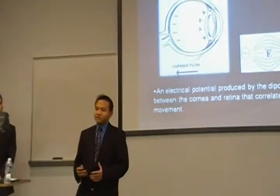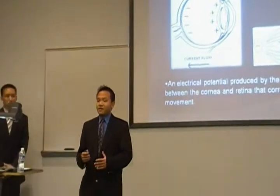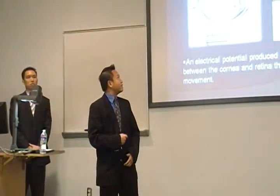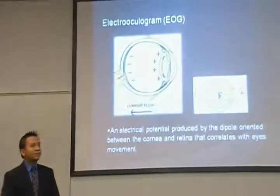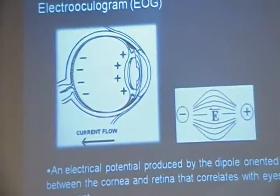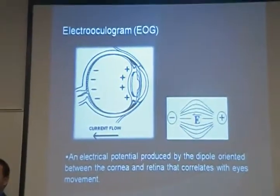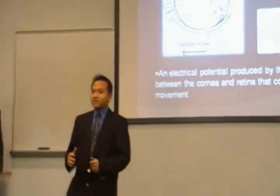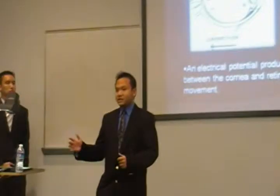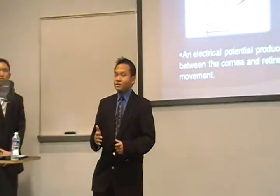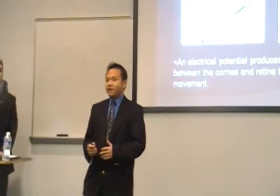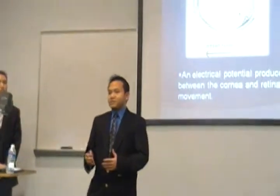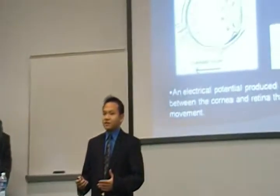To understand what EOG signal is, we first have to understand the physiology of the human eye. In our eyes, we have a cornea, located in front of the eyes, and the retina, which is the back of the eyes. The cornea is positively charged while the retina is negatively charged. There is also a current in the eye flowing from positive to negative that produces an electrical dipole with a potential difference that can be measured. This measurement is essentially what the EOG signal is.